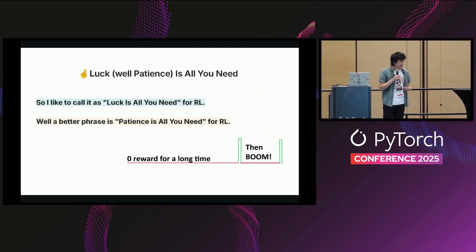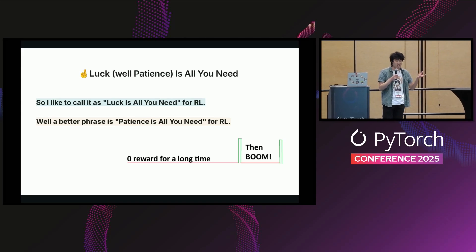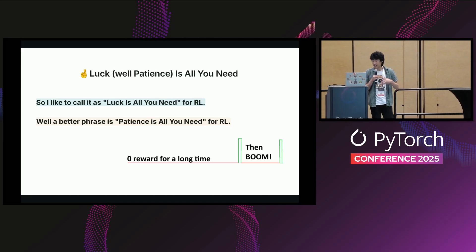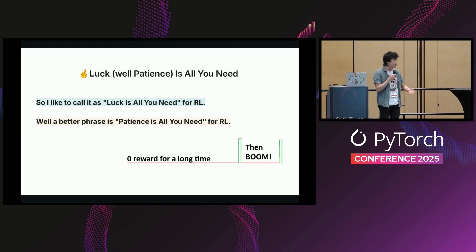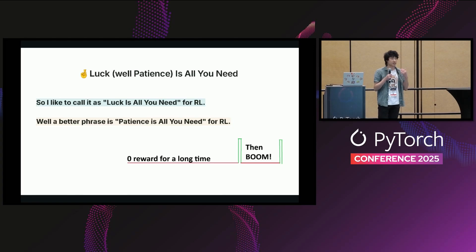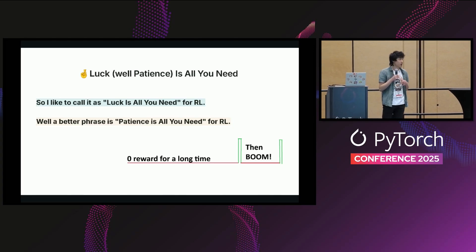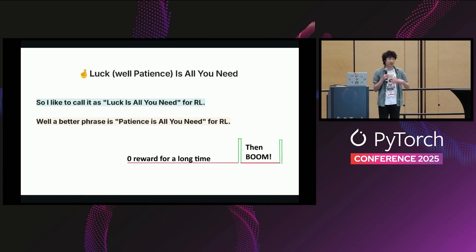That's why I like to phrase it as 'luck is all you need for RL' — but actually it's more like patience is all you need. You just have to wait long enough and RL will learn. The reward function for the 2+2 example will start off at zero, zero, zero... and then suddenly increase because it sees a 3 or a 4. That boom of increase in the reward function is essentially the start of the RL algorithm actually working.